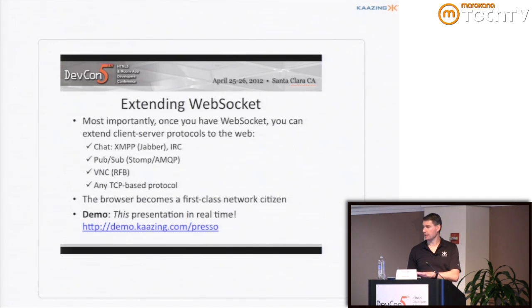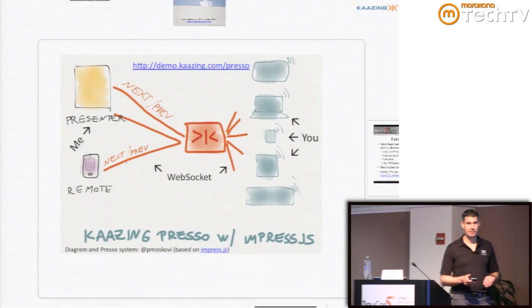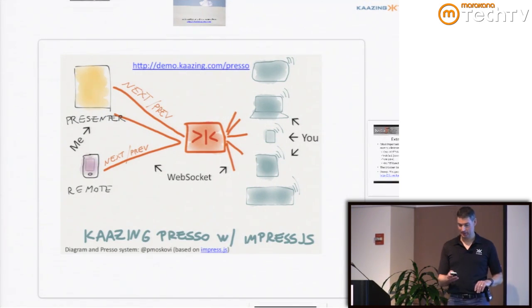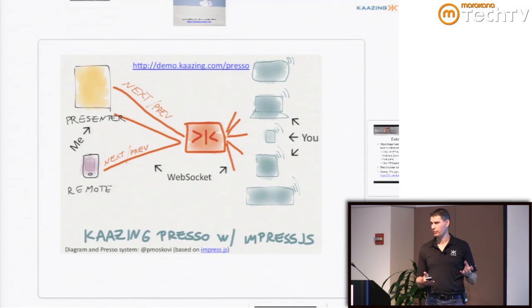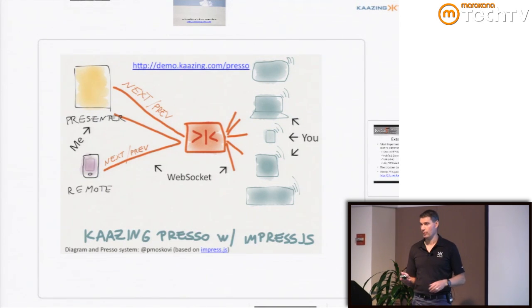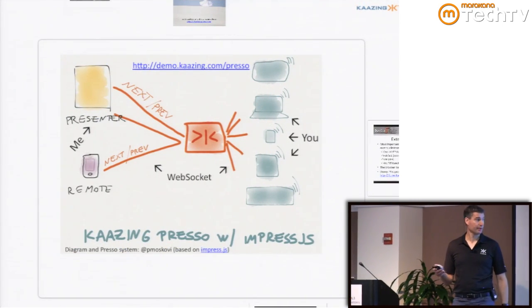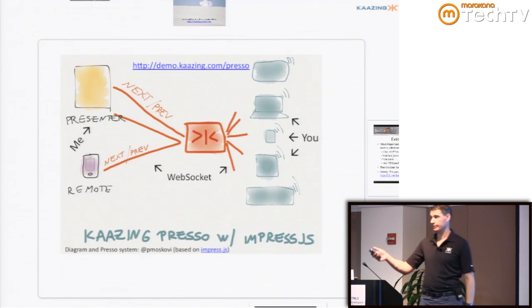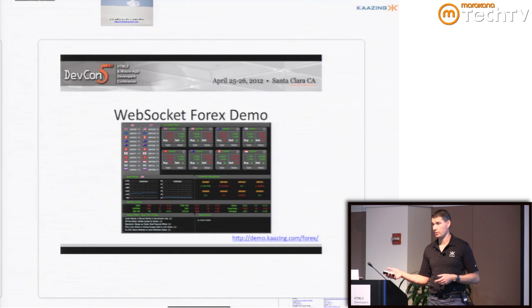Here's a demo of extending WebSocket to speak a messaging protocol. This is my iPhone - I'm actually controlling the slides. This is a project that Peter Moskovitz from Kazing put together. You may be familiar with Prezi, a Flash-based presentation tool. Somebody said, well, we can do that in HTML5 - they created ImpressJS. Then Peter created what we call Preso, an extension where you can control it using WebSockets. If you go to that URL you can view it. I can swipe my finger across it and control the slides. This entire presentation was done using HTML5, ImpressJS, and Preso using WebSocket.